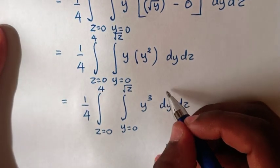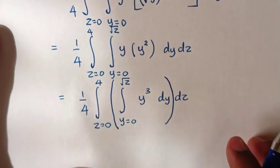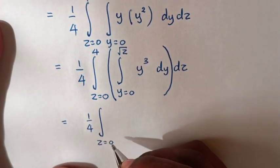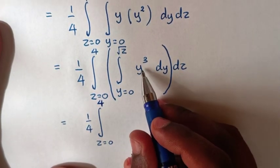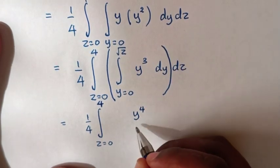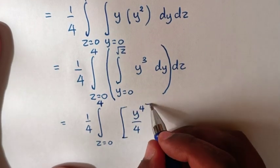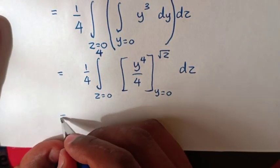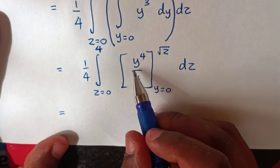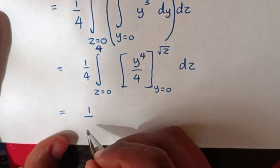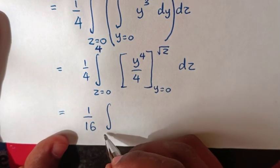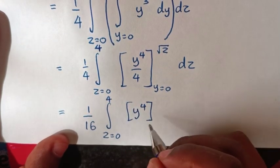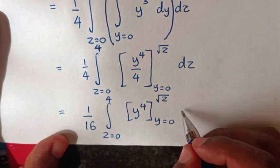Next step, we integrate with respect to dy. So this will be equal to 1 over 4, integral from z equals 0 up to 4, then the integral of y³ with respect to dy is y⁴ over 4, then bracket within the limits y equals 0 up to square root of z, dz. This will be equal to: from inside the bracket y⁴ over 4 — 1 over 4 is a constant, so we multiply — giving 1 over 4 times 1 over 4 equals 1 over 16. Then integral from z equals 0 up to 4, in the brackets y⁴ from the limits y equals 0 up to square root of z, with respect to dz.